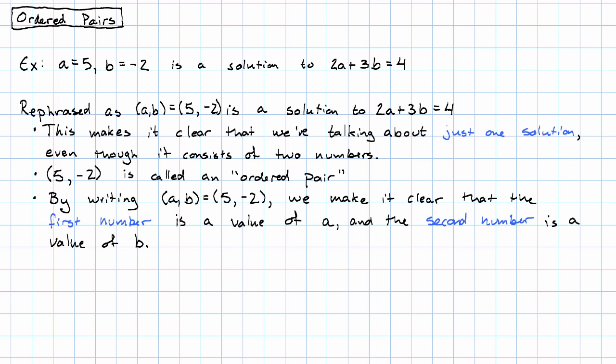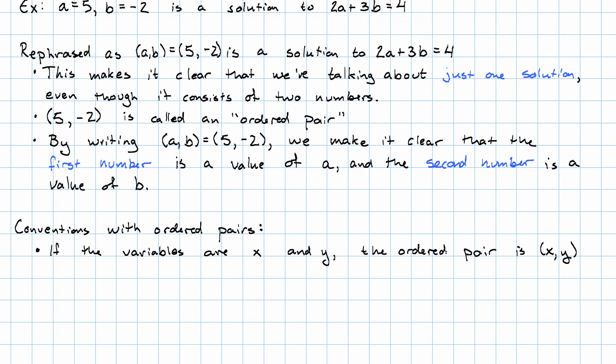There are some conventions that we use in order to not always have to write the ordered pair of the variables first. If the variables are called X and Y, then the ordered pair is X first, then Y.